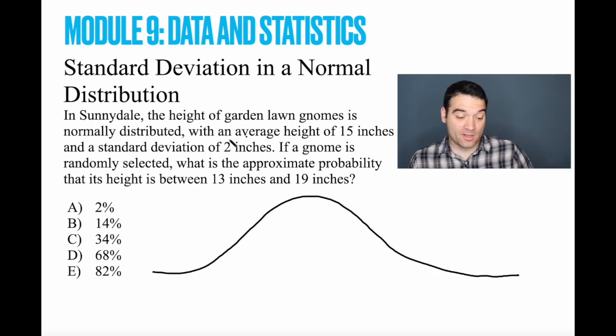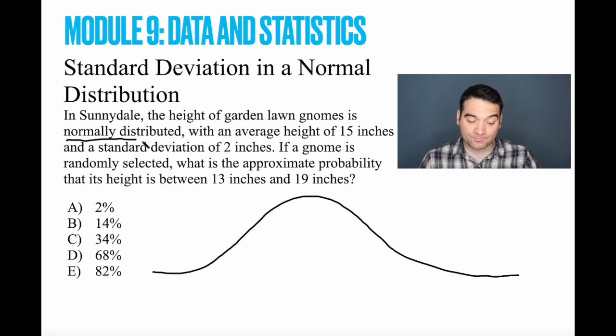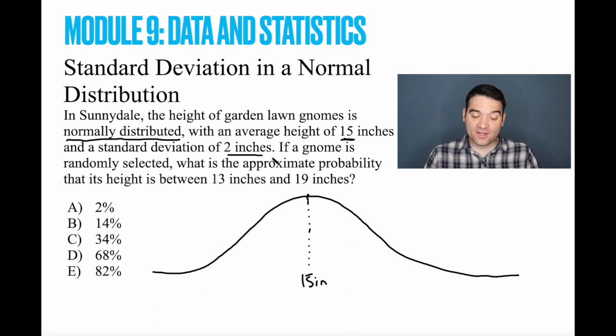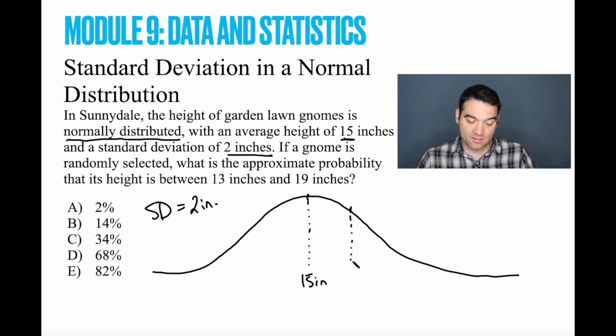In Sunnydale, the height of garden lawn gnomes is normally distributed. There's that term. With an average height of 15 inches and a standard deviation of 2 inches. If a gnome is randomly selected, what is the approximate probability that its height is between 13 and 19 inches? Okay, well, the minute we see this term normally distributed, we're going to draw a bell curve, right, as always. And we're told that the average, what we know now, the middle, right, is going to be right there at 15 inches. And if the standard deviation is 2 inches, so I'll write in standard deviation equals 2 inches, I can quickly fill out the rest of this graph. Right, so there's 15 inches. 2 inches above that is 17 inches. That's a difference of 2 inches. 1 standard deviation. So 34%.